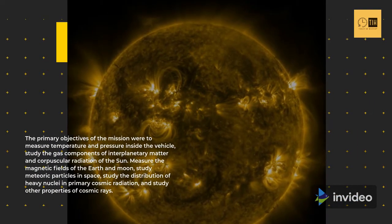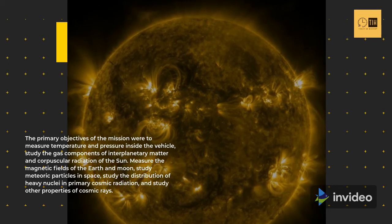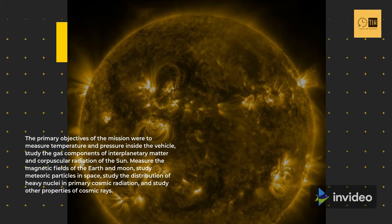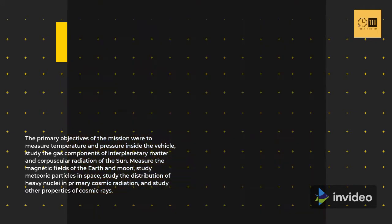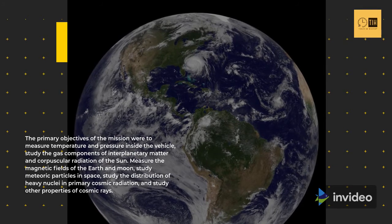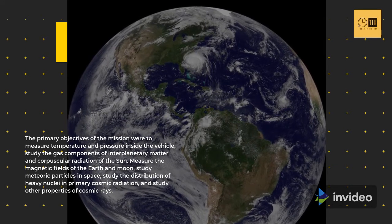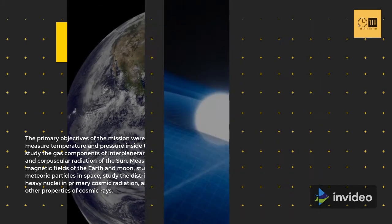The primary objectives of the mission were to measure temperature and pressure inside the vehicle, study the gas components of interplanetary matter and corpuscular radiation of the Sun, measure the magnetic fields of the Earth and Moon, study meteoric particles in space, study the distribution of heavy nuclei in primary cosmic radiation, and study other properties of cosmic rays.